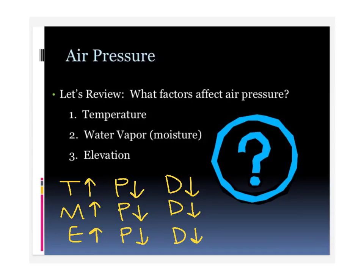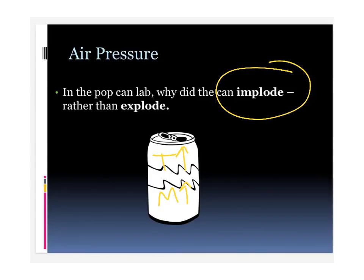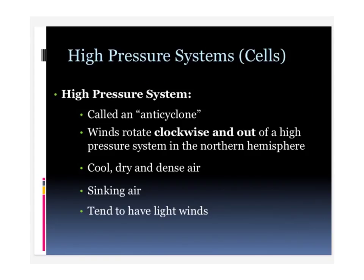With your pop can lab, I saw a lot of your hypotheses that the pop can was going to explode. I honestly don't think I'd still have my job if I let you blow up pop cans. What actually happened was that the can imploded, which meant it went inside. You raised the temperature and you raised the moisture level inside the pop can, so you created a very low pressure inside that pop can, with high pressure on the outside. Because pressure flows from high to low, that can imploded rather than exploded. To explode a can, you would have to create high pressure on the inside and low pressure on the outside.